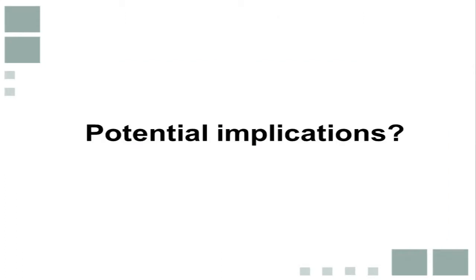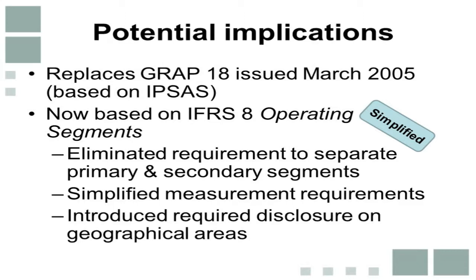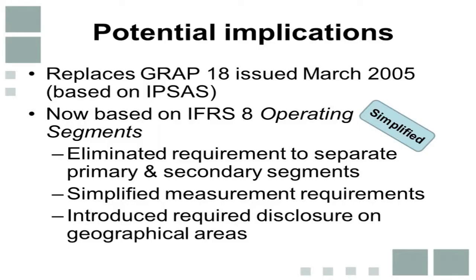The last area is the potential implications of GRAP 18. GRAP 18 replaces the version of the standard issued in 2005 and is based on IFRS 8 operating segments. The board decided to base it on IFRS 8 because it is simplified from the previous standard — it eliminated the requirements to separate primary and secondary segment information and simplified the measurement requirements. What is new is the introduction of disclosure on geographical areas, which are the entity-wide disclosures. That concludes the presentation on segment reporting.